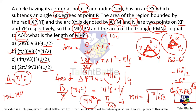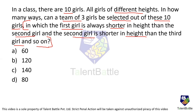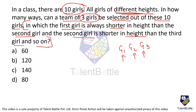Final problem: in a class of 10 girls, all of different heights, in how many ways can a team of 3 girls be selected such that the first is shorter than the second, and the second shorter than the third? Since all girls have different heights, any selection of 3 girls automatically satisfies this ordering condition.